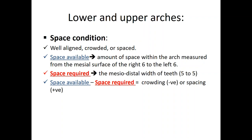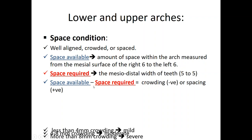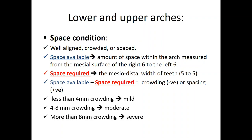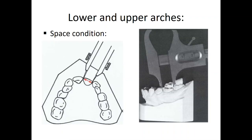Space required, on the other hand, is the mesiodistal width of all teeth from the second molar on one side to the second molar on the other side — permanent teeth, of course, not deciduous. If the result is less than 4 millimeters, this is mild crowding; 4 to 8 is moderate crowding. To do the space analysis we need sharp dividers, a ruler, a pencil, and our space analysis form.